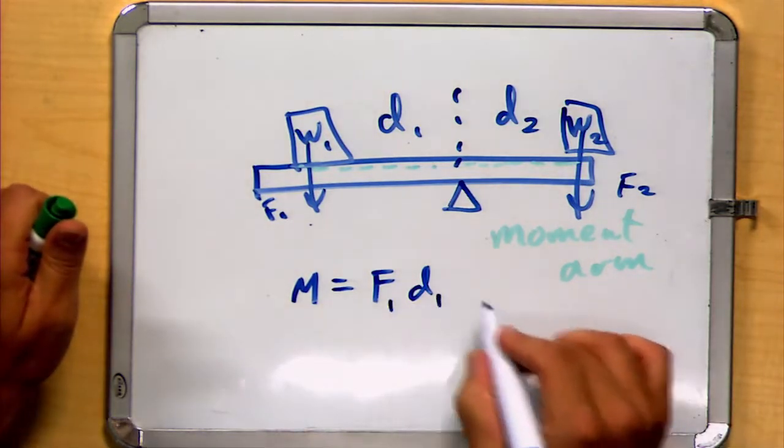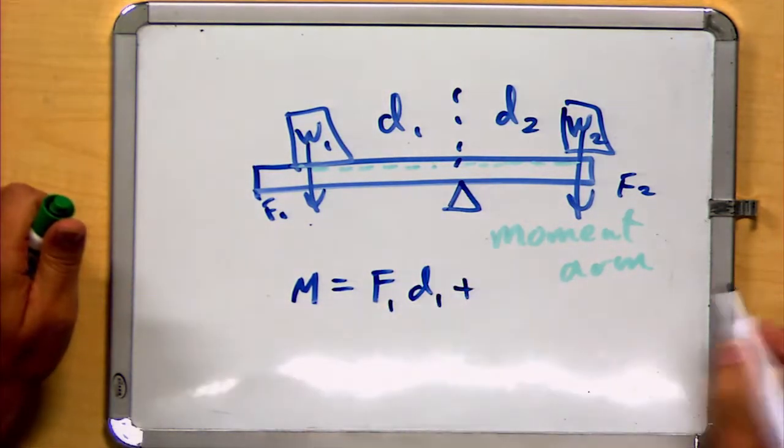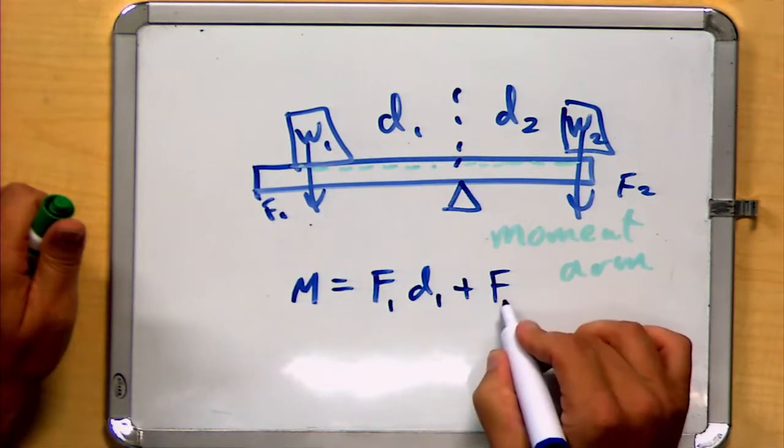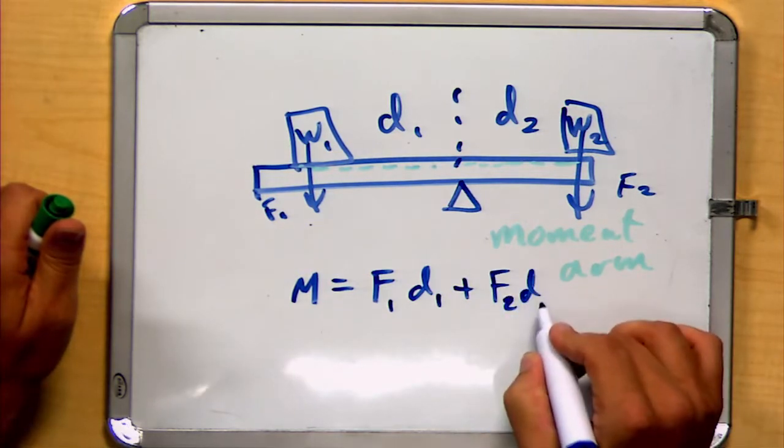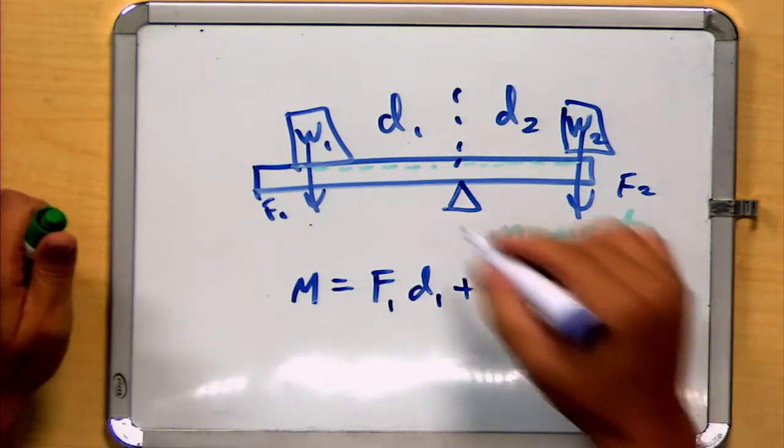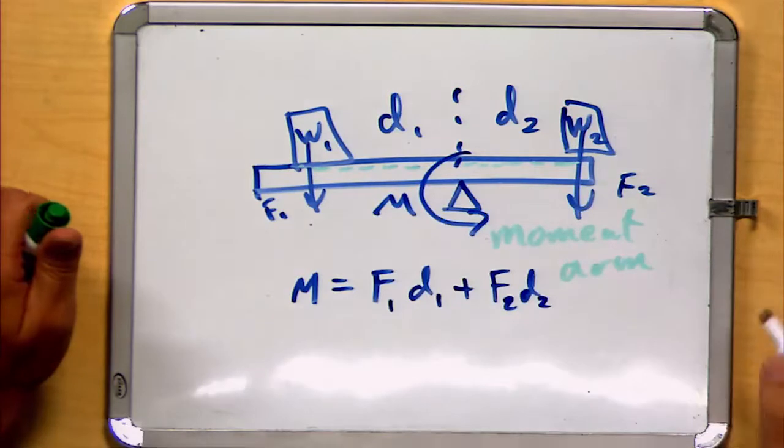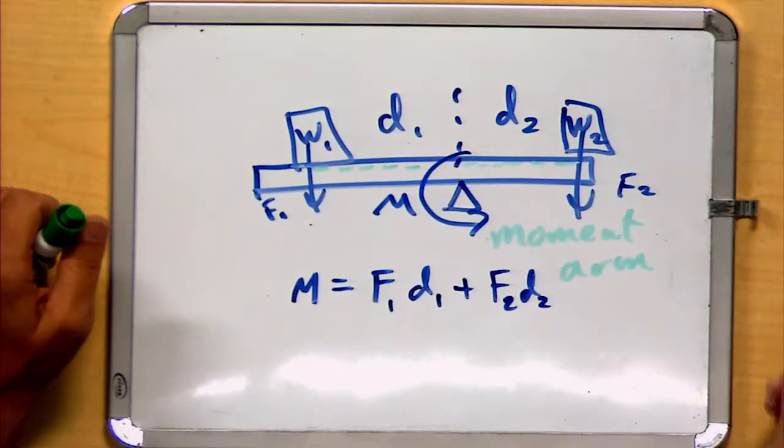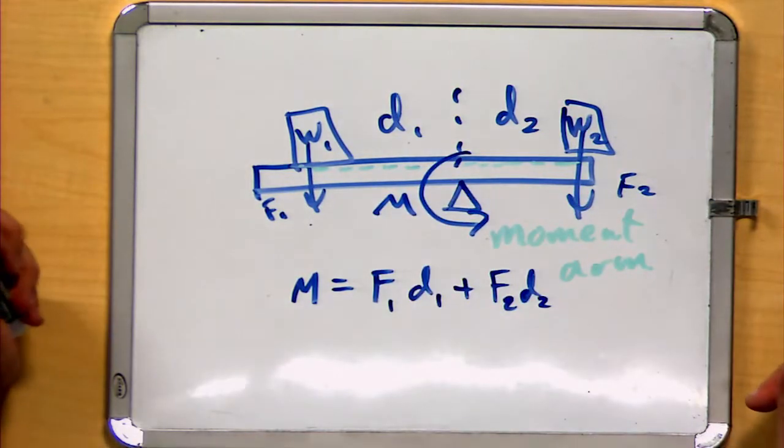And we typically consider the total sum of all these moments. So the forces due to weight one and the forces due to weight two were summed together to give a total moment around the axis point. And if we were in equilibrium, we would find conditions that resulted in that moment being zero.